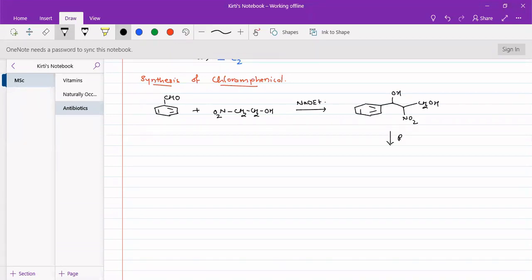Then we can reduce this nitro group into an amino. CH2OH can be written like this. After reduction, we will get an amine. So this now can be what we want to have in chloramphenicol. Here is our nitro group. So we will do nitration here.